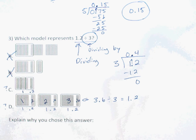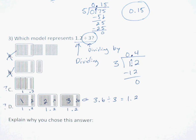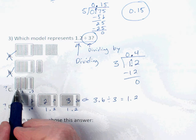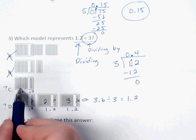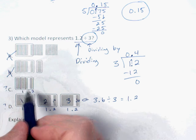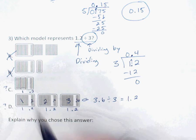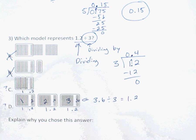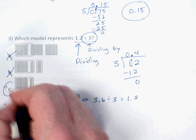That's where your computation answer really helps. My computation answer is four tenths. Looking inside each section of C, I can count four tenths, four tenths, four tenths — each piece is four tenths. So C is the correct answer. Write your explanation in your own words.